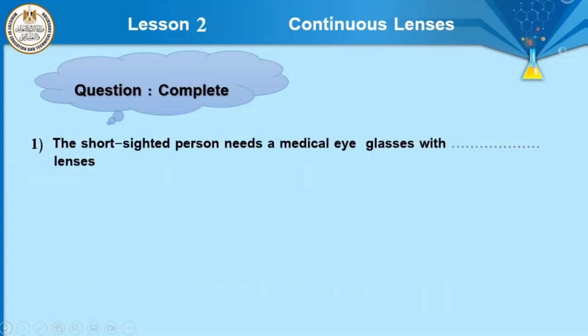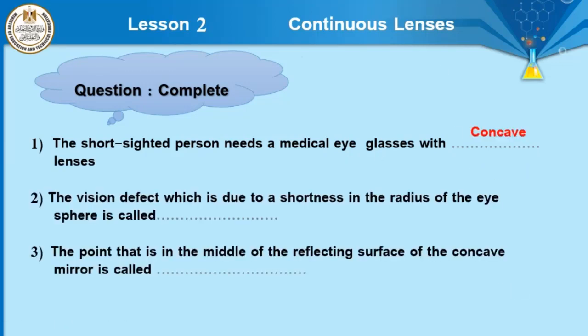Some questions on this lesson. Question number 1: the short sighted person needs medical eye glasses with which type of lens? Ahmed answered: concave lens. Excellent, Ahmed! The short sighted person needs medical eye glasses with concave lenses.